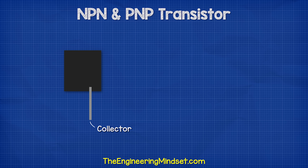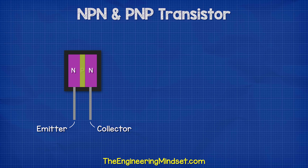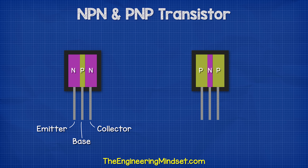Inside the transistor, we have the collector pin and the emitter pin. Between these in an NPN transistor, we have two layers of N-type material and one layer of P-type. The base wire is connected to the P-type layer. In a PNP transistor, this is just configured the opposite way.